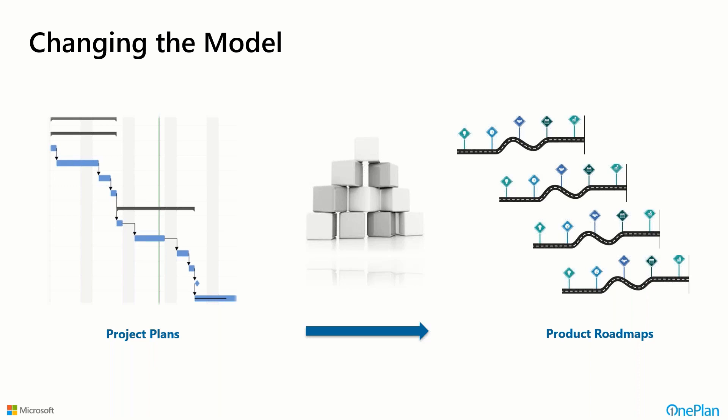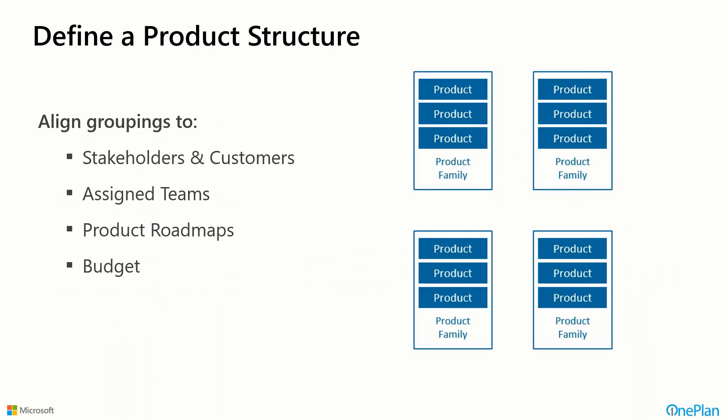The idea is to fund these things differently too. We define a product structure in our portfolio, aligning product families with individual products, understanding stakeholders and assigned teams. We have product roadmaps and higher-level budgets that we allocate over time in smaller chunks or iterations as we deliver against those product line roadmaps.